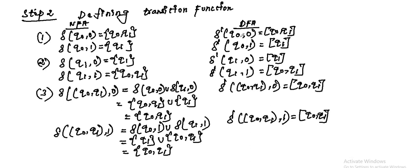Whatever you get on the left-hand side, you write on the right-hand side. So del dash(Q0, 0) equals {Q0, Q1} and del dash(Q0, 1) equals Q1. Proceed to the next step by keeping the given answer, and proceed the same way if you get any new state. If you get the same state repeatedly, you should stop. Here we are getting new states Q0, Q1, and Q1. So proceed with the next step. Del of Q1 with input 0: Q1 with 0 goes to Q1, and with 1 goes to Q0 and Q1.